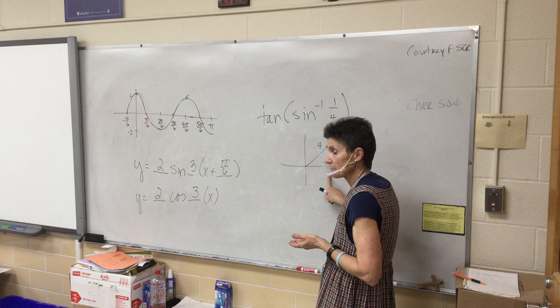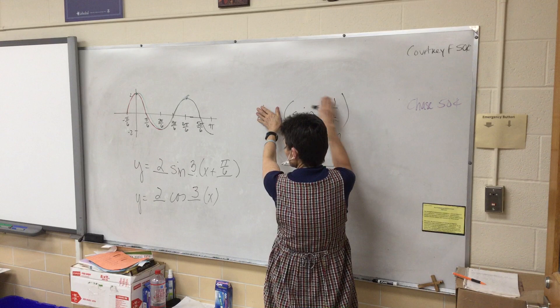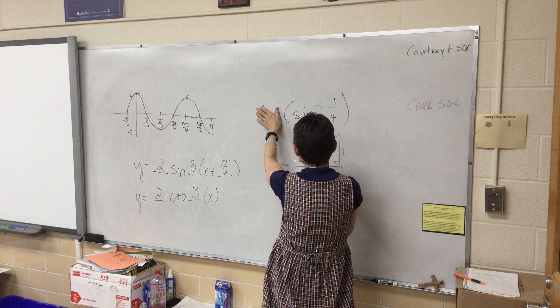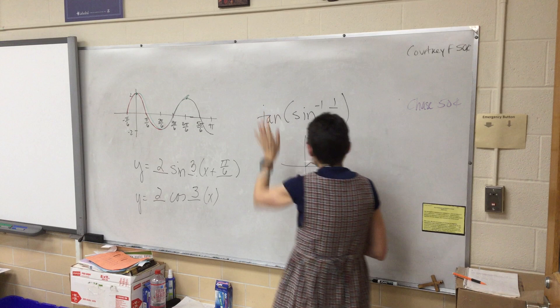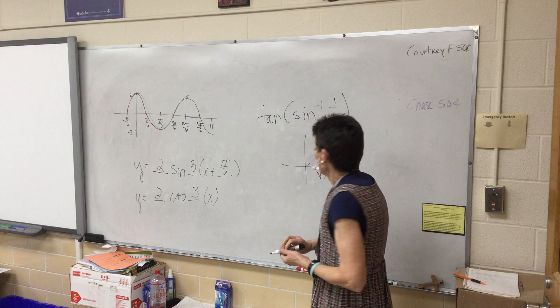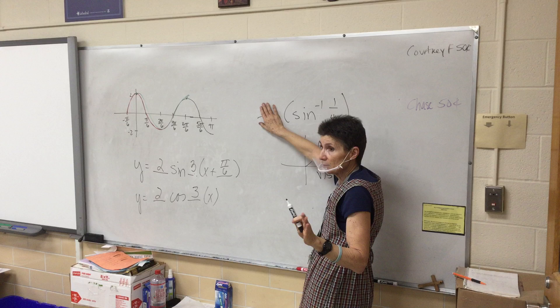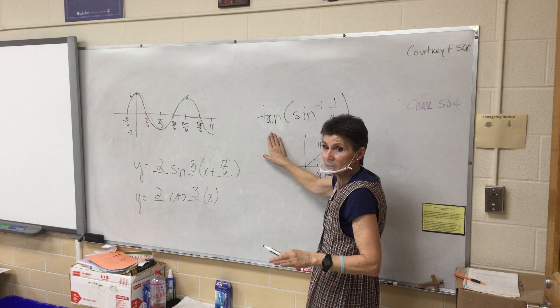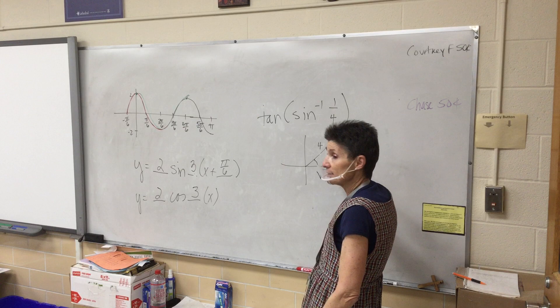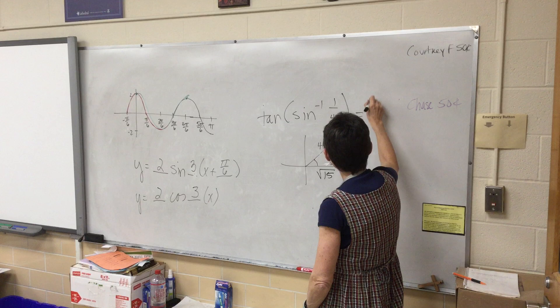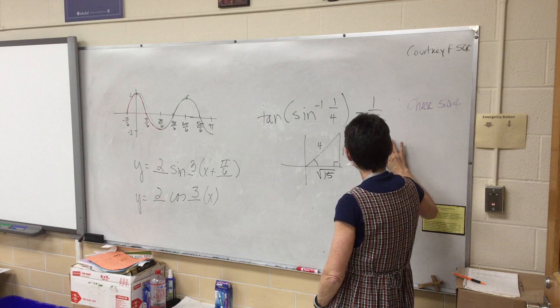I'm just drawing a picture of this angle. The third side is the square root of 15 — that's 16 minus 1. If the question asked for the angle itself, I'd be in trouble without a calculator. But it wants the tangent of that angle. Tangent is opposite over adjacent, so the answer is root 15 over 15.